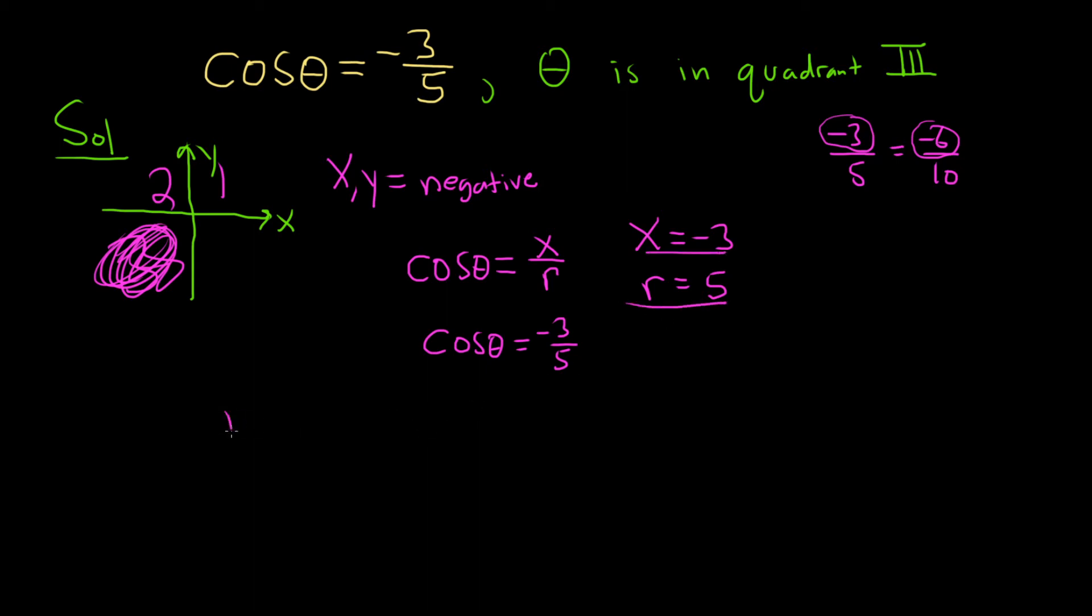So to find y, we can use the formula r squared equals x squared plus y squared. So r is 5. This is 5 squared. x is negative 3. So this is negative 3 squared. And we don't know y, so we're trying to find that. This is 25 equals 9 plus y squared. Subtracting 9 will give us y squared equals 16.